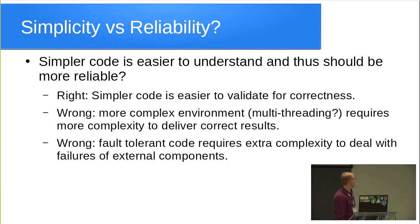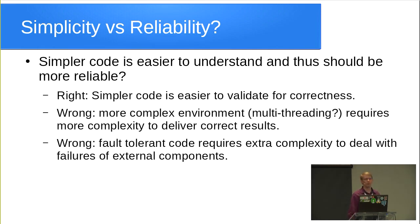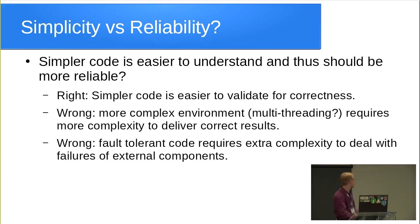If we look at simplicity and reliability, we want simpler code, we want everything to be easy — it must just work. The reality however is it's not quite that easy. Simple code we can validate; it's easier to look at and very easy to see whether it's correct or not. Simpler code is better. However, more complex environments — server parallelism, multi-threading — throw that out of the door. Fault tolerant code means that if external components fail, our code needs to be able to deal with that. It does get quite a bit more complex.